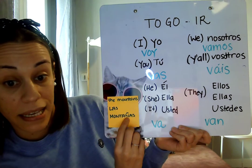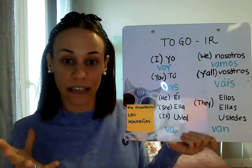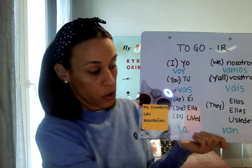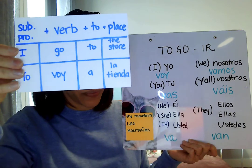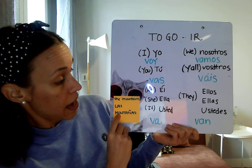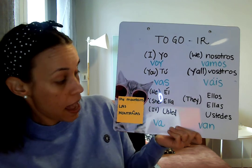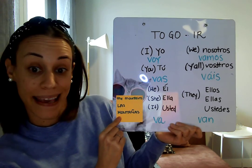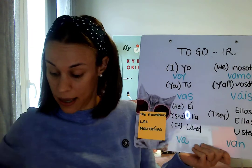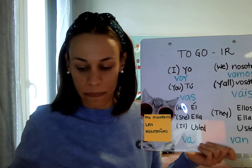You notice here that this N with the squiggle on top makes the ñ sound, as if it had an N and a Y together. Las montañas. So, using our template, we will say: la ardilla — ella, la ardilla — ella va a las montañas. Ella va a las montañas. Or you can also just say: la ardilla va a las montañas.